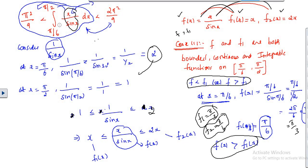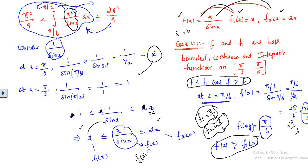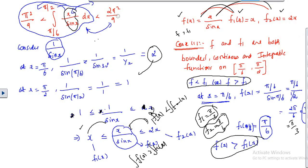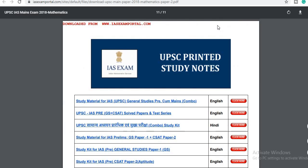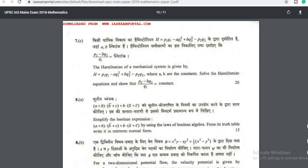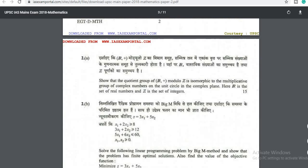To summarize: first I found the range of x/sin(x) between x and 2x, defined f, f1, f2, compared f with f1 to get the lower bound π²/9, and compared f with f2 to get the upper bound 2π²/9. Combining Case 1 and Case 2 proves the inequality. We have now solved 2 problems on the 2018 question paper; in the next video we will solve another important problem. Thank you.